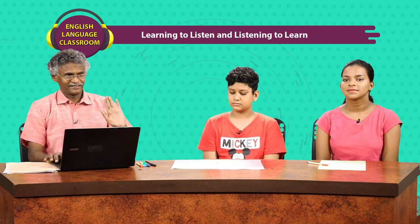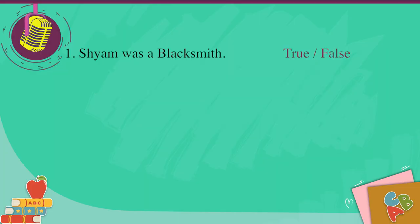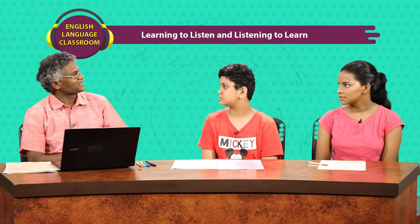Learners, check your answers. They have given all right answers — you may have got some wrong, nothing to worry. We will listen to it again after another activity. Here is the activity: here are some seven or eight statements. I am going to read out and you will have to say whether the statement is true or false. Statement one: Shyam was a blacksmith. That statement is false — Shyam was a tinker.